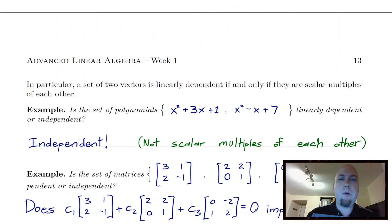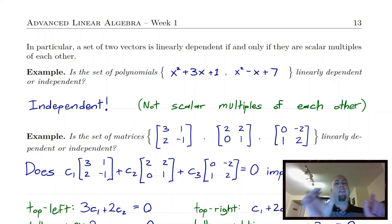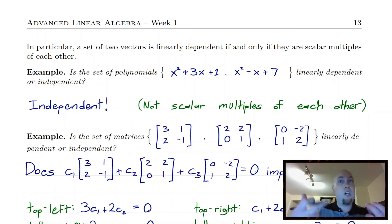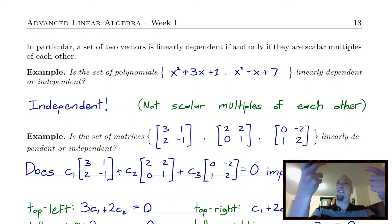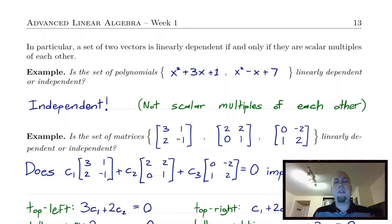There's one final note before we do examples: if you have a set containing just two vectors, then it's really easy to determine whether the set is dependent or independent. It's dependent if and only if the vectors are multiples of each other, and it's independent otherwise. The reason for this is you're just asking: is there one vector in the set that's a linear combination of all the other vectors? Well, if there are only two vectors in the set, you're just asking whether one is a scalar multiple of the other — a linear combination of just one vector is just scalar multiplication.